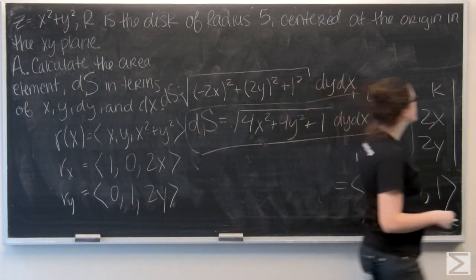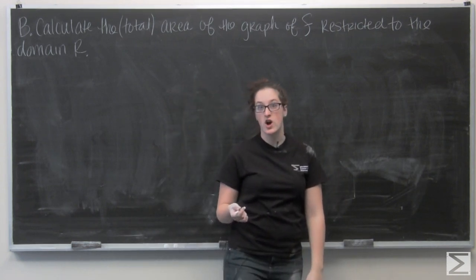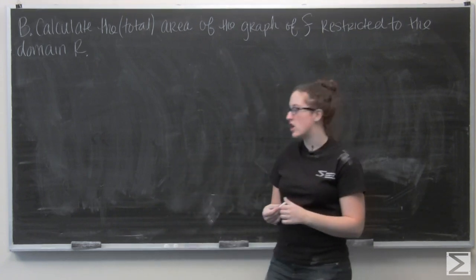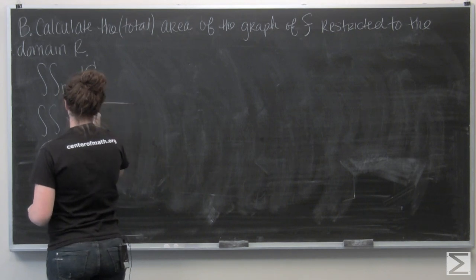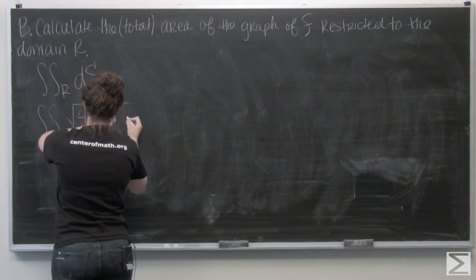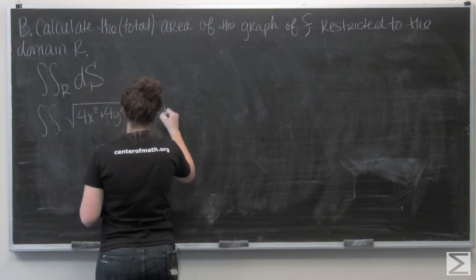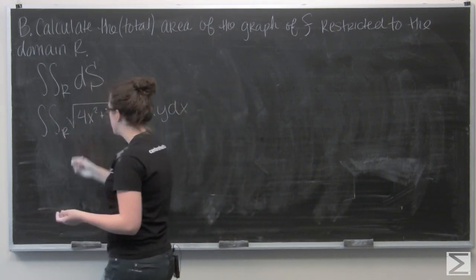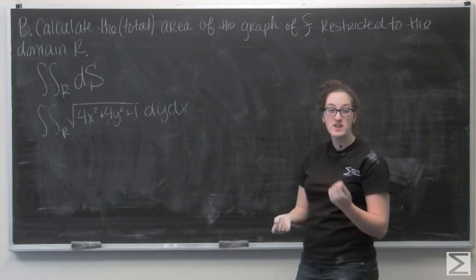Let's move on to part B. So B asks us to calculate the total area of the graph of f restricted on r. So this is just going to be the integral of ds over that region r. Well, I don't know about you, but this looks like it's maybe not the best to calculate it in Cartesian coordinates. I'm going to switch to cylindrical.